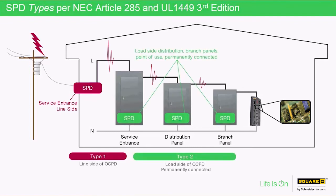Moving into Type 2 SPDs, they are permanently connected, hardwired, intended for installation on the load side of the main service equipment device. These SPDs may also be installed at the main service equipment, but must be installed on the load side of the main service device overcurrent protection device. Type 2 SPDs may or may not require an overcurrent protection device per their listing. If specific overcurrent protection is required, the SPD's listing file and labeling instructions are required to note the size and type of the overcurrent protection device.